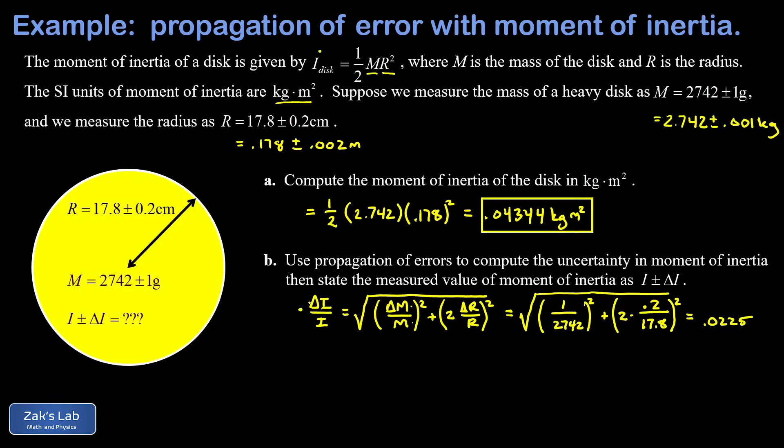That's the uncertainty divided by the moment of inertia itself, and we still need to solve for the uncertainty in the moment of inertia. So we have to multiply both sides by I. I take my 0.0225 and I multiply it by my original moment of inertia computed in part A.